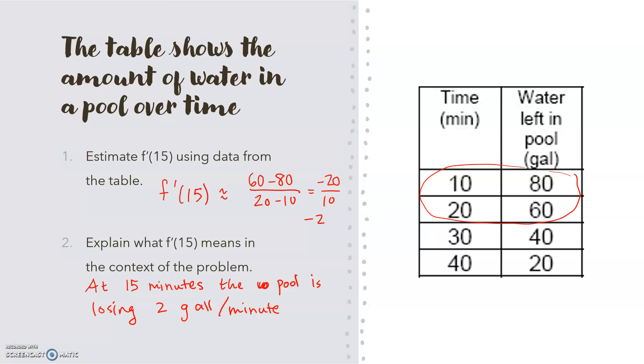If I were grading this problem, I'd want to make sure that you understood that you need to talk about that 15. That's the instant rate of change. I would want to make sure that you had something like that at 15 minutes. And then I would want to make sure that you understood this sign. So it's losing 2 gallons. And then I'd want to make sure you had the correct units, 2 gallons per minute.